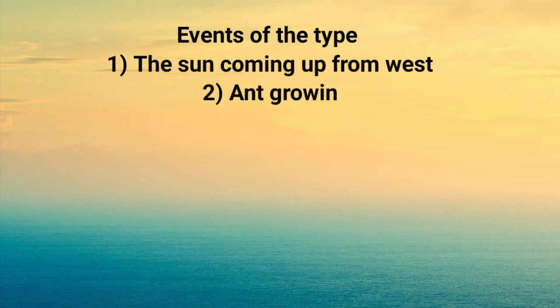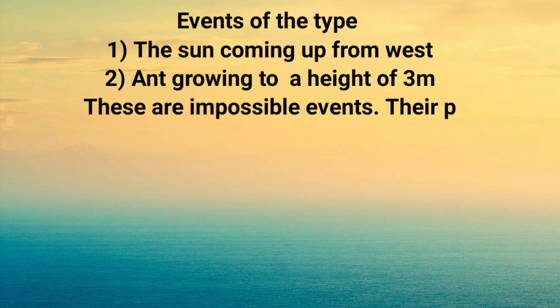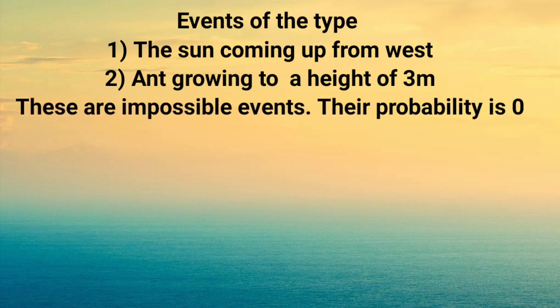Now let's talk about events which are impossible. The sun coming up from west, this is an impossible event. Growing to a height of 3 meters, this is also an impossible event. These events which are impossible, their probability is 0.